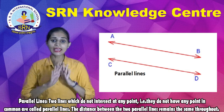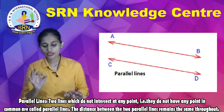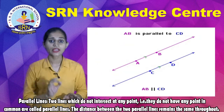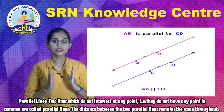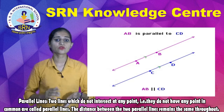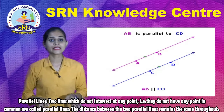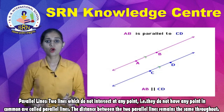Now, Parallel Lines. Two lines which do not intersect at any point — that is, they do not have any point in common — are called parallel lines. The distance between the two parallel lines remains the same throughout.